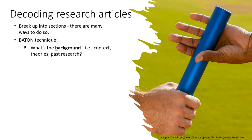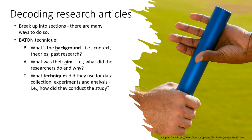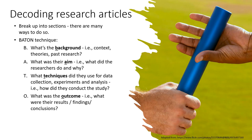In this technique you break the article up into five discrete reading sections. The first is the Background or B, where you look for context, theories, and past research. Then you have the Aim, where you're looking for what the researchers did and why. Then T for Techniques, looking for data collection methods, experiments, and analysis tools. Then the Outcome, where you look for results, findings, and conclusions. Finally, the Next Step — what the article can lead to and what follows from it.